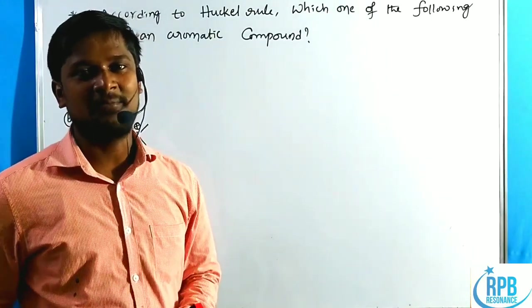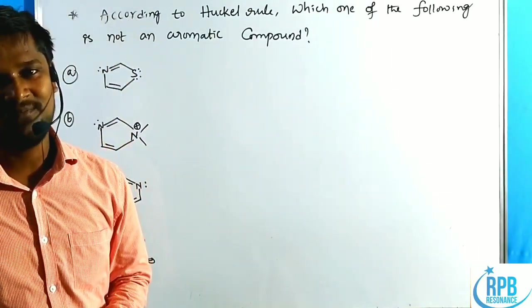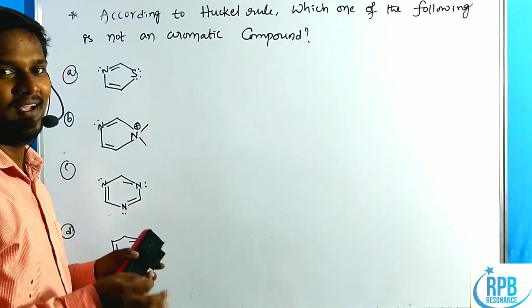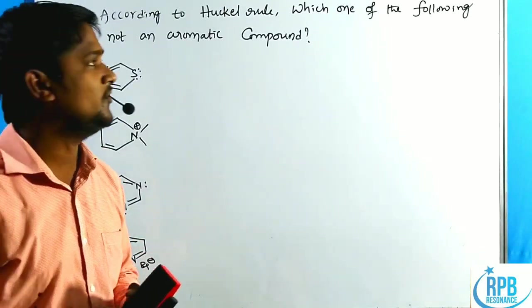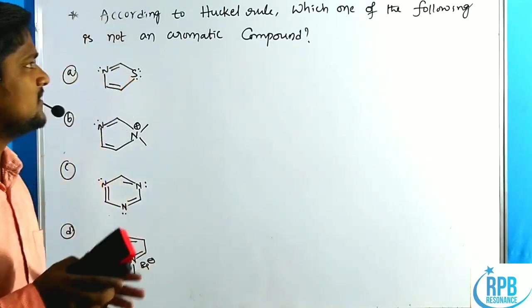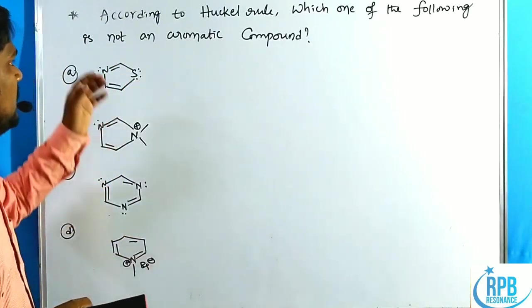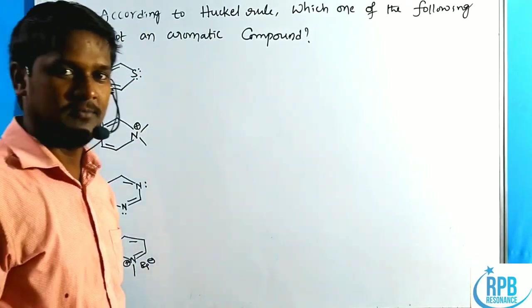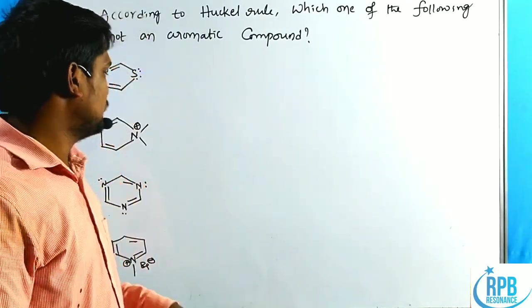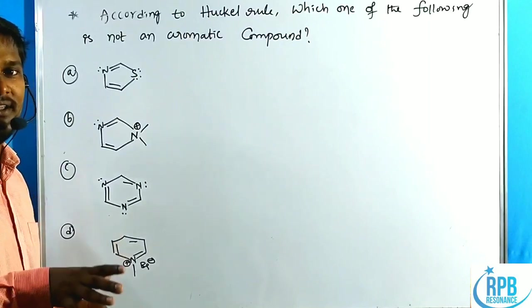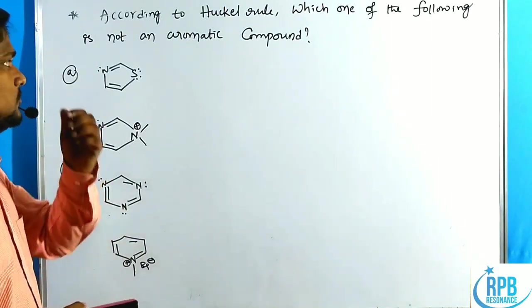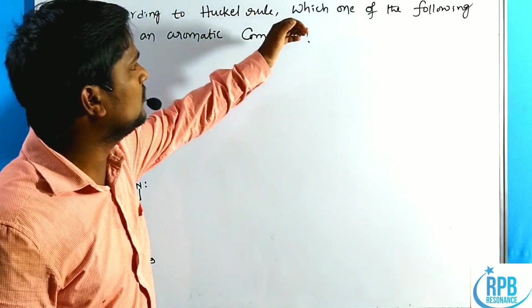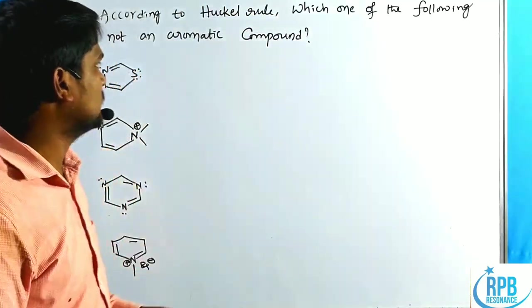Welcome to RPB Resonance Chemistry. In this telegram doubt session number three, we are discussing an important problem regarding aromatic compounds. Specifically, we will discuss all the hetero types of aromatic compounds, and according to the question, according to Hückel's rule, which one of the following is not an aromatic compound.